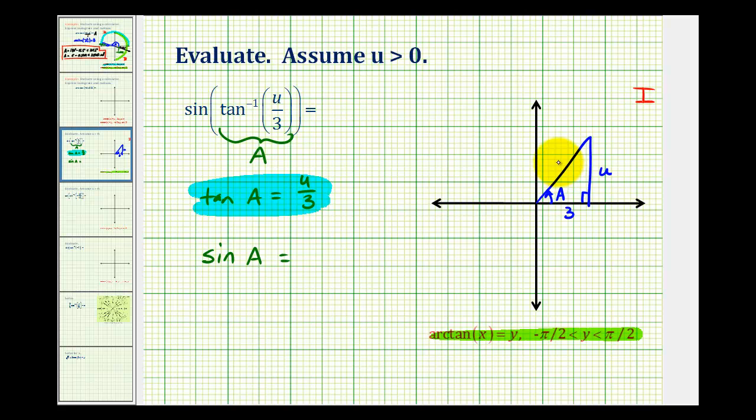We know that c squared must equal a squared plus b squared. If we call this c, then c squared equals u squared plus three squared, which is nine. So c is equal to the square root of u squared plus nine.